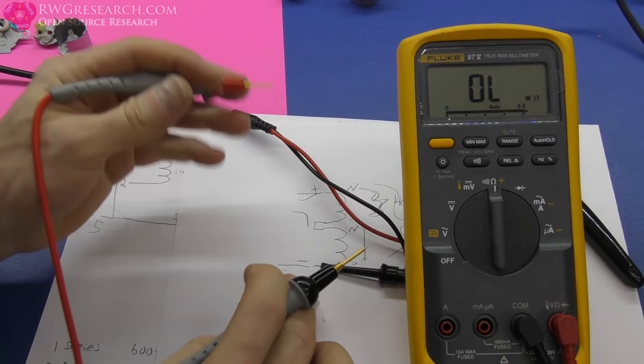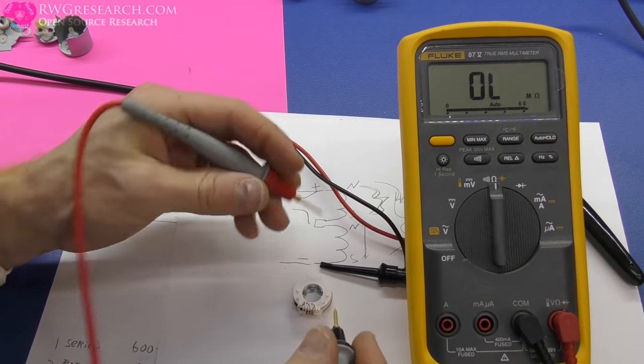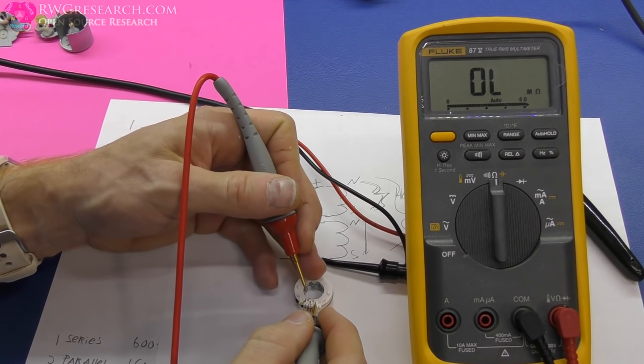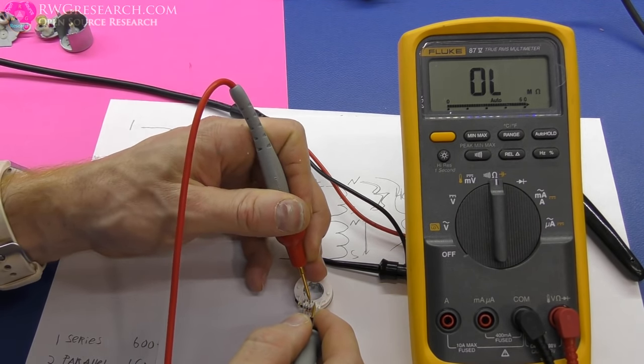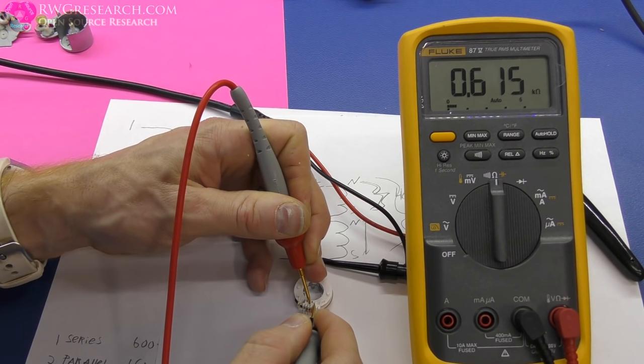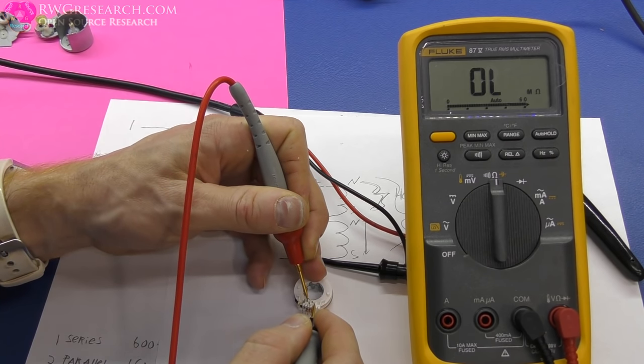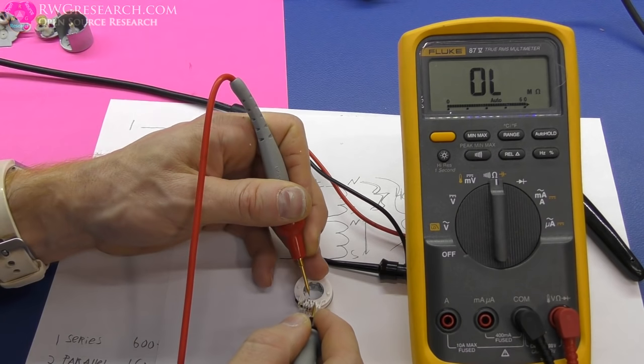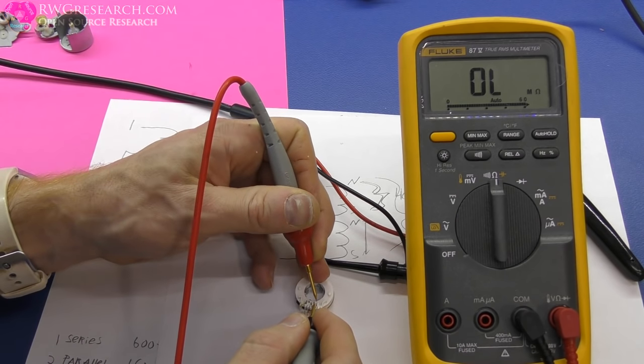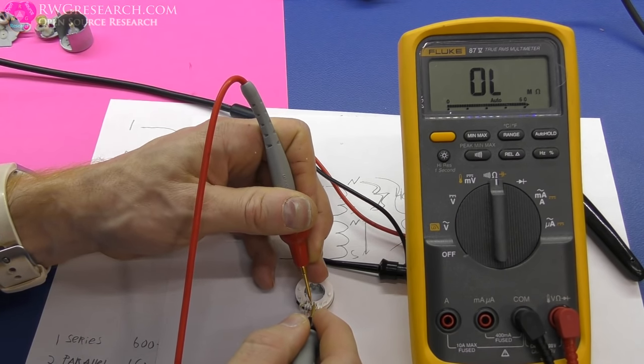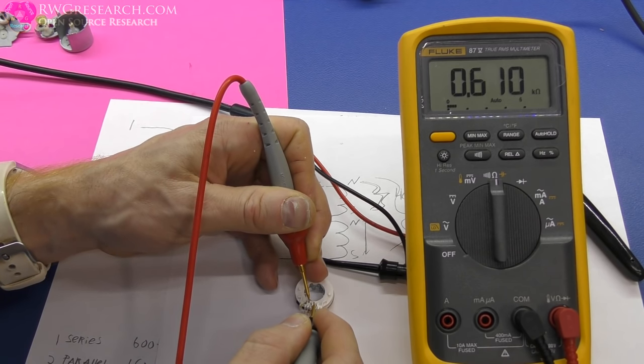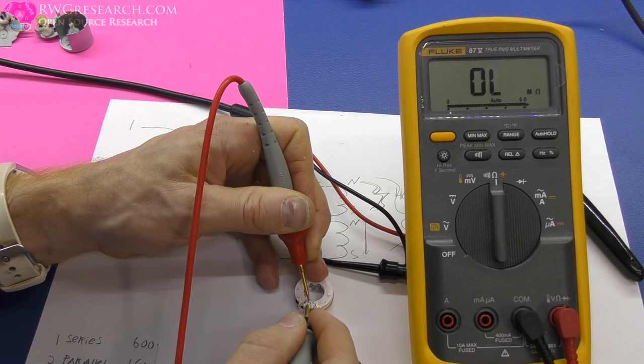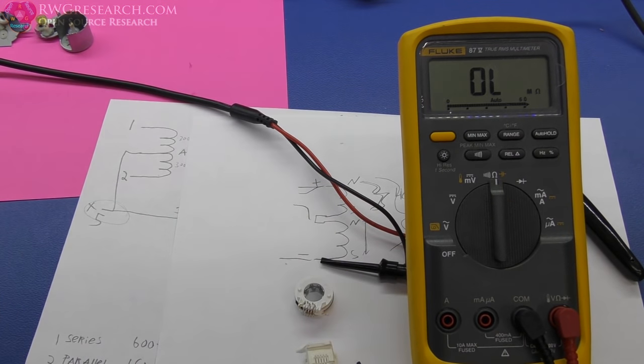So before we assemble it, let's go ahead and check and make sure we've got the coils configured right. So between the first and the second, I should have nothing. Between the first and the third, I should have 600. And between the first and the fourth, I have nothing. The fifth is nothing now. Now between the second and third, I have nothing. And the second and fourth, I should have 600. So we've got that correct. And nothing between the last two. So now we can reassemble it.